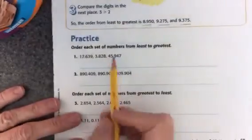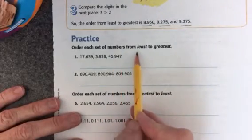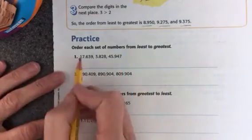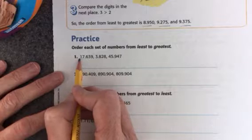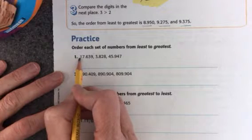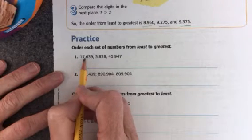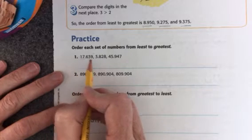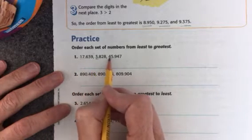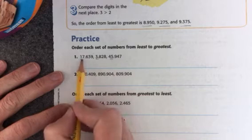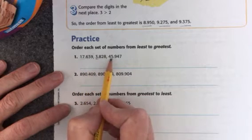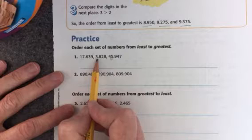All right. Now you're going to order each set of numbers from least to greatest. So you're going to look at the numbers. Right here this is a little bit tricky because I'm looking in front of the decimal point. I have 17. That part's not tricky. I have 3 and I have 45. So I can tell just by looking at those whole numbers which one's the smallest. It's definitely 3.